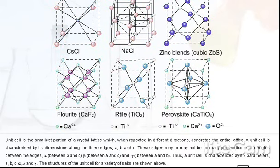Angles between the edges alpha between B and C, beta between A and C, and gamma between A and B. Thus, a unit cell is characterized by six parameters A, B, C, alpha, beta, and gamma. The structures of the unit cell for a variety of solids are shown above.